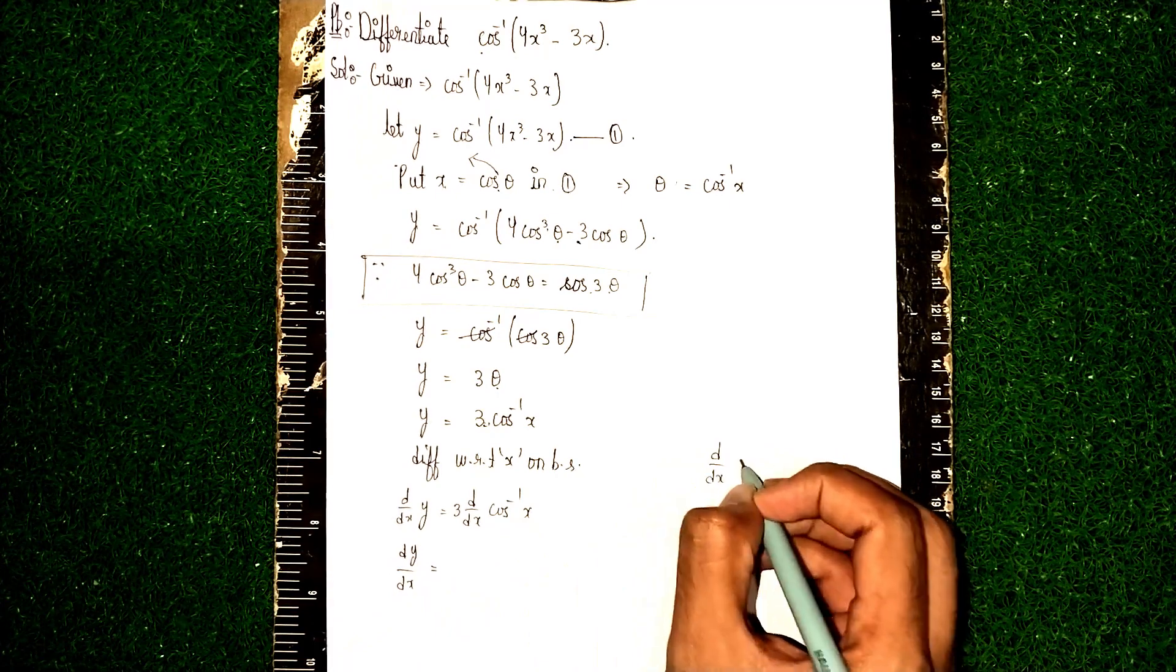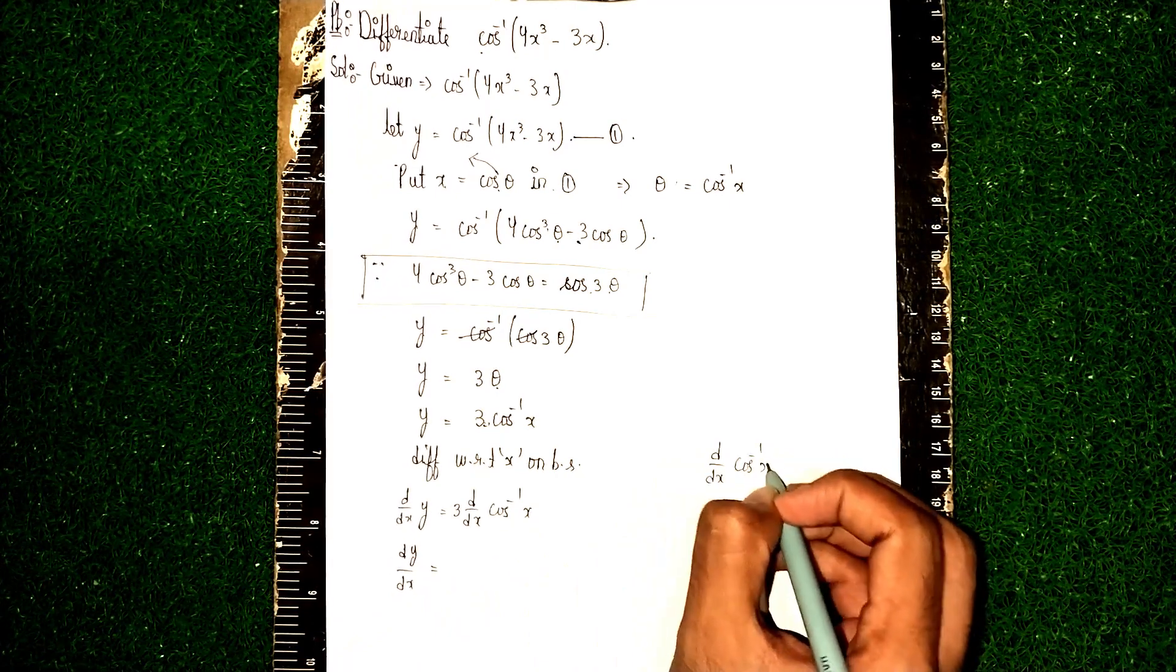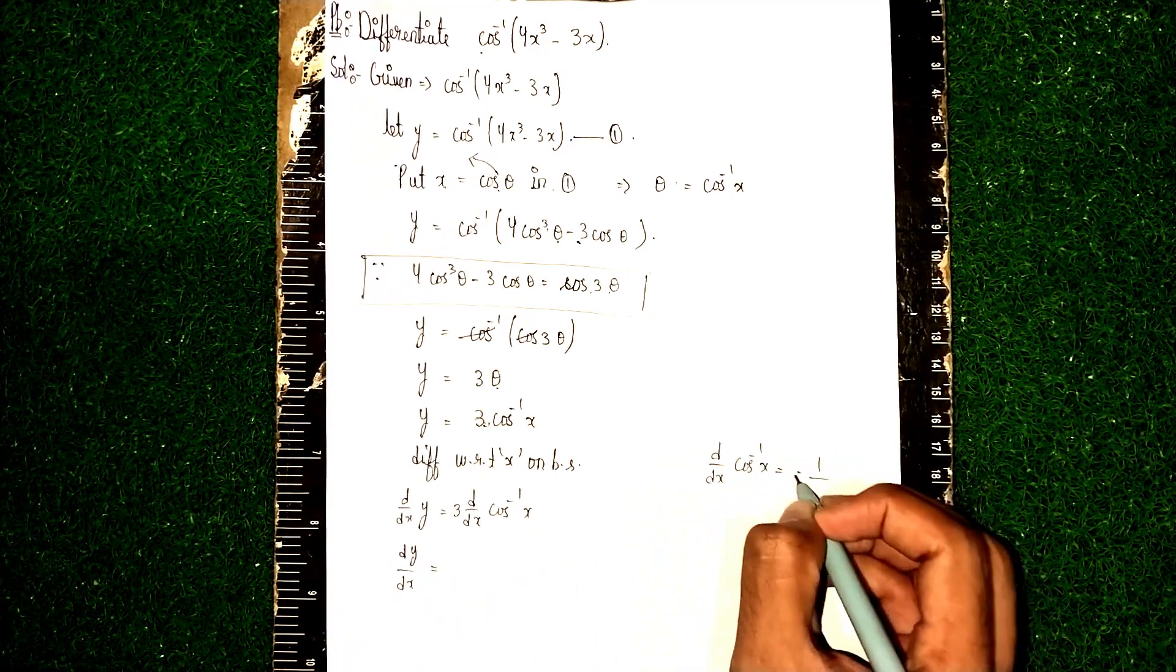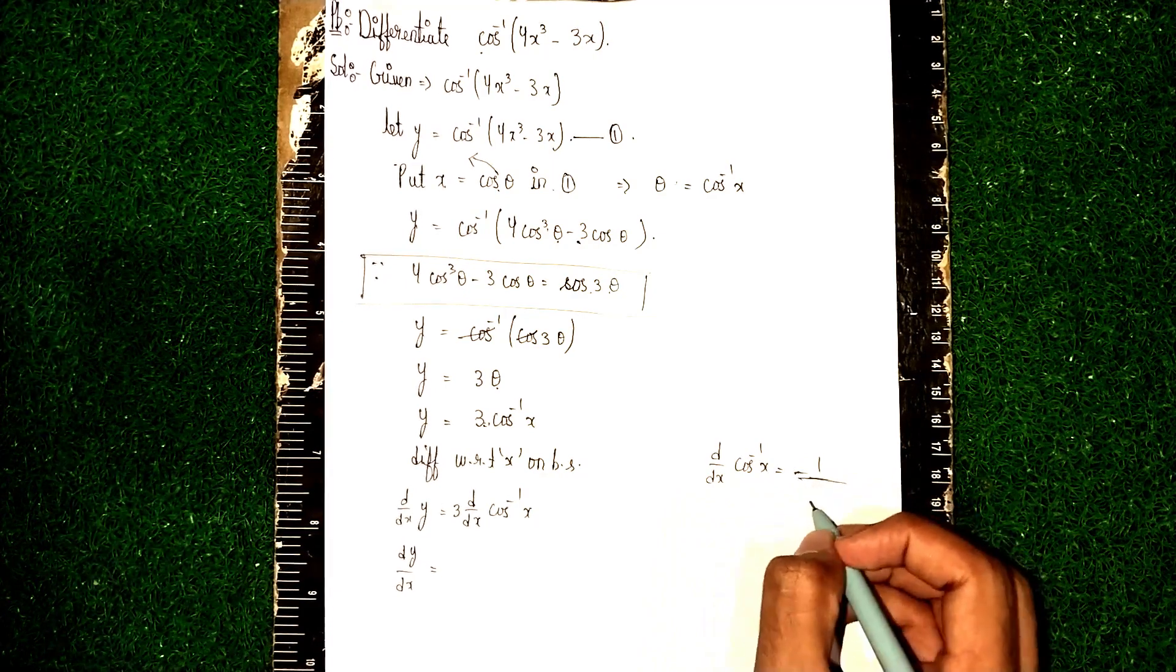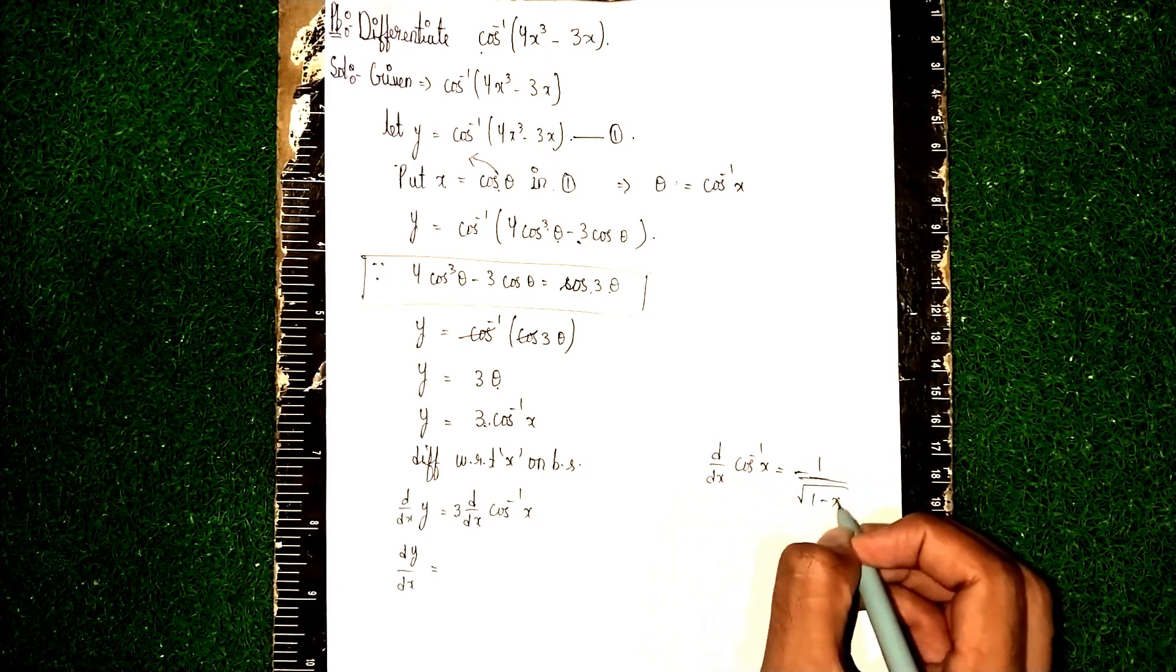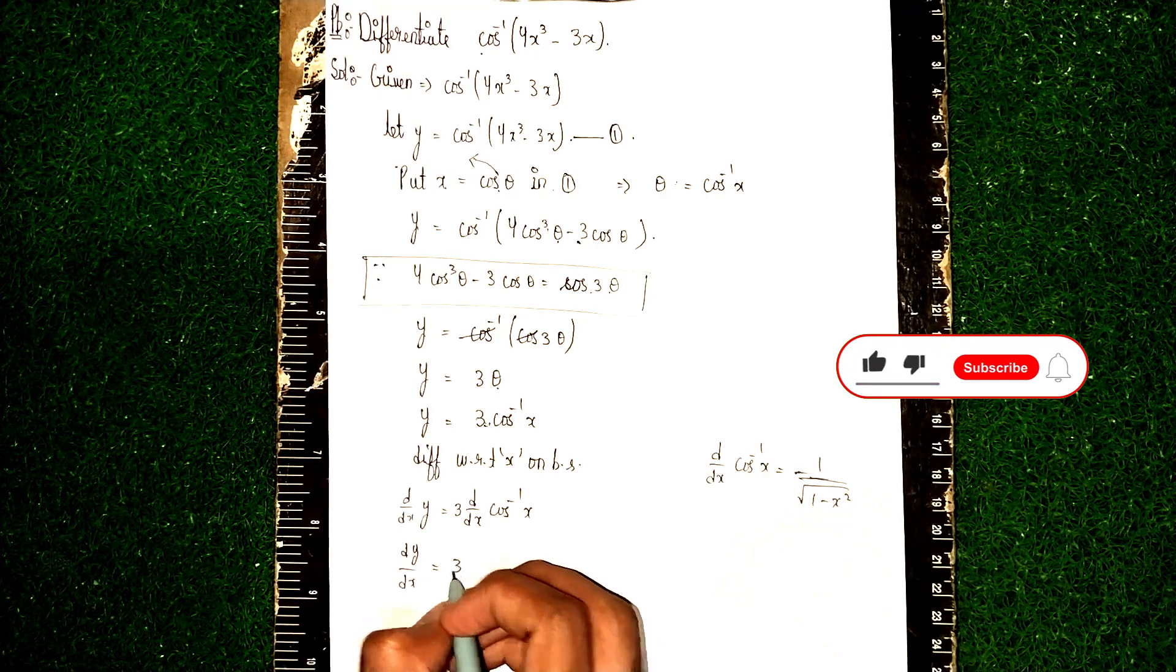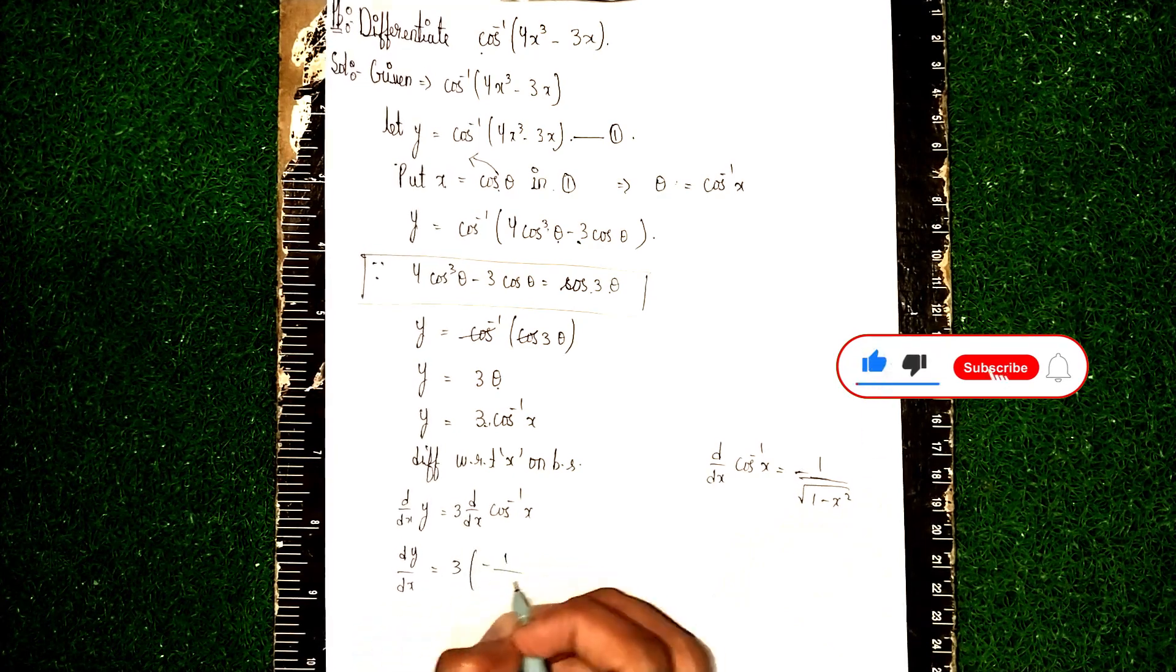So dy/dx is equal to - the differentiation formula d/dx of cos inverse is minus 1 by under root 1 minus x². So we got 3 into minus 1 into under root 1 minus x².